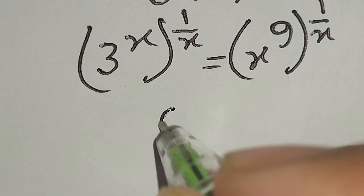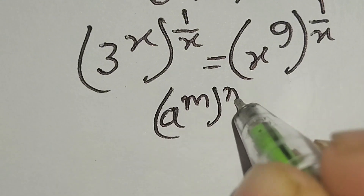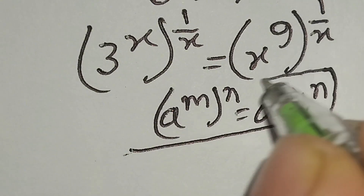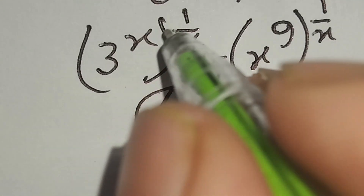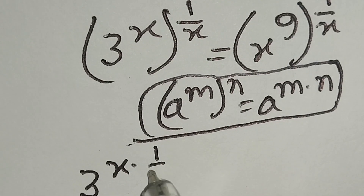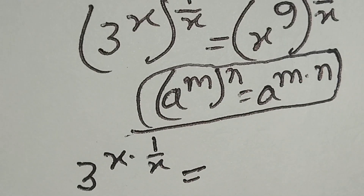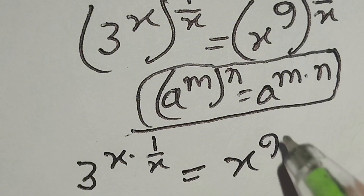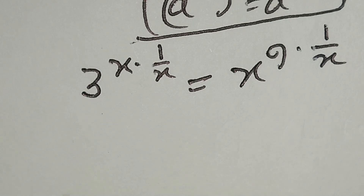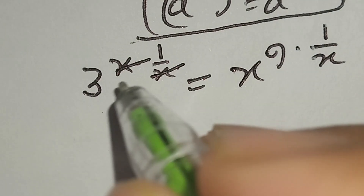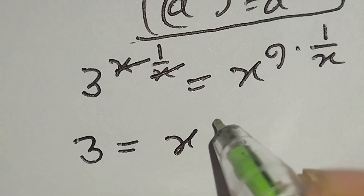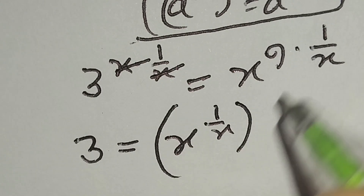We know that a to the power m, whole power n, is equal to a to the power m times n. According to this formula, we can write: 3 to the power x times 1 over x is equal to x to the power 9 times 1 over x. Here, x and x cancel out, so we get 3 is equal to x to the power 1 over x, whole power 9.